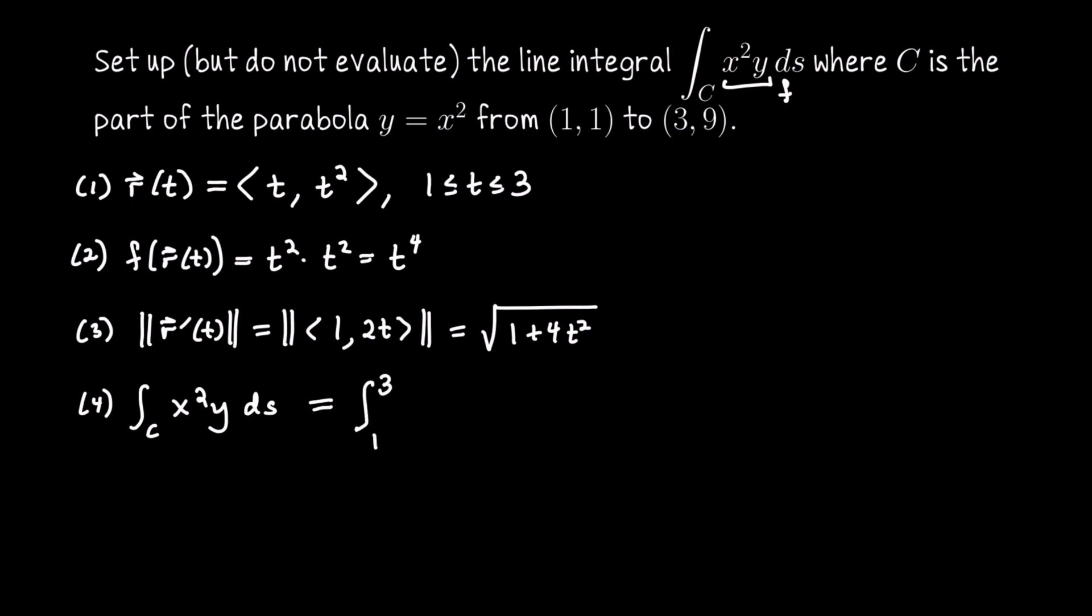f(r(t)), which is t⁴, times the speed √(1 + 4t²) dt.